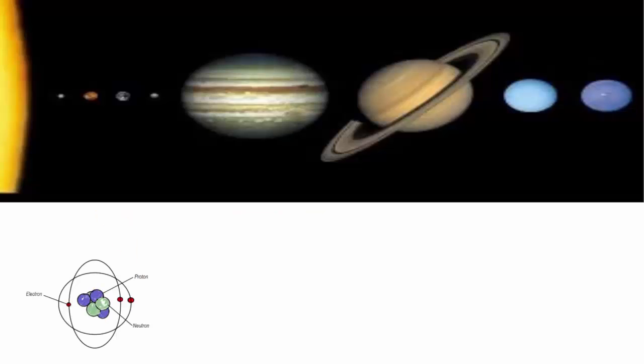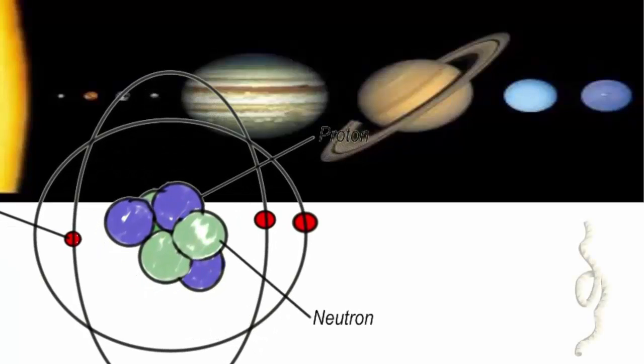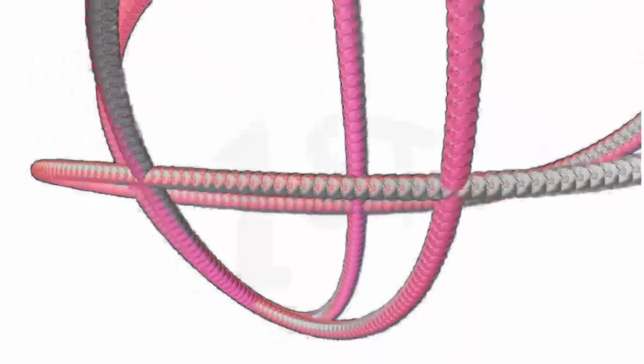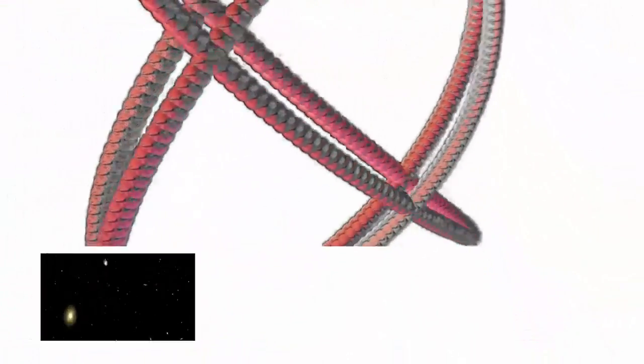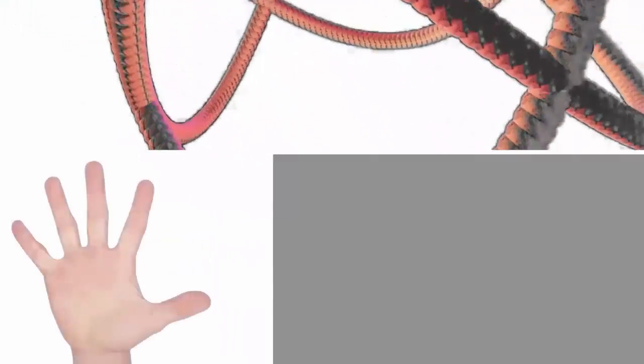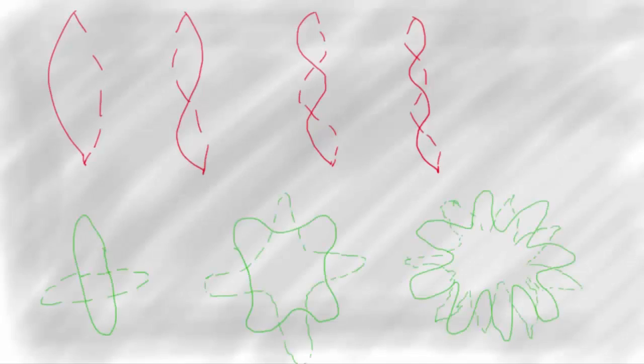So, now let's say if we made an atom the size of the solar system, a string will be about the size of a tree. String theory is the first theory of physics that tries to explain everything. It tries to explain how the universe began and where it is going. It also explains everything we feel, see, or measure. If this theory is true, everything and every force is the result of vibrations of strings.